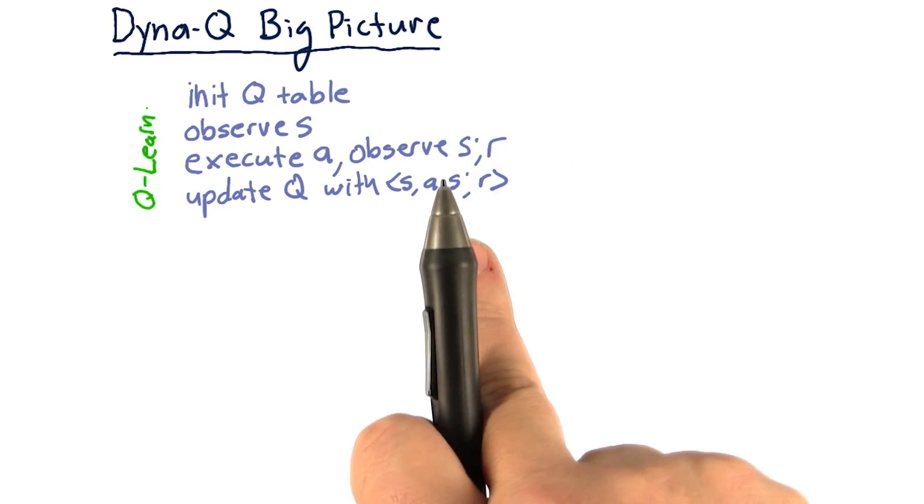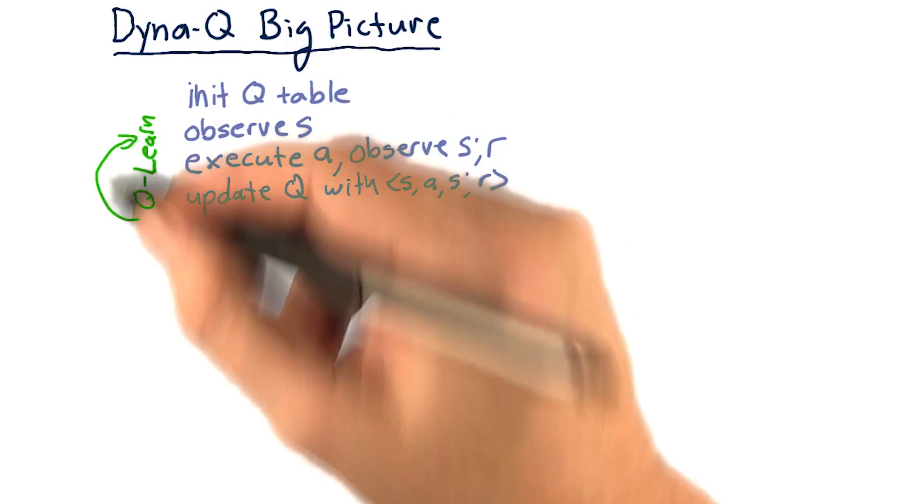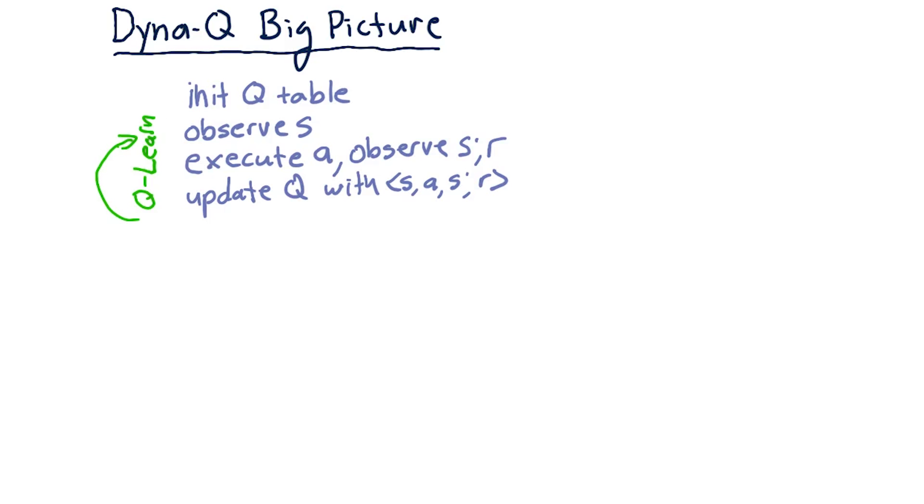We then update our Q-table with this experience tuple, and repeat. And we do that over and over again, interacting with the world.